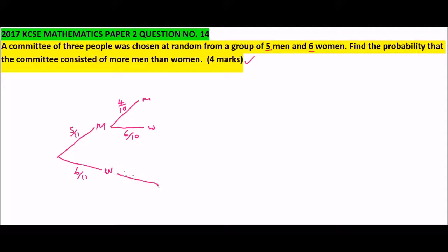Coming to the other branch — where we chose a woman first — the second time we could choose a man or a woman. Since men remained the same, the probability of choosing a man is 5/10. We had chosen one woman, so they remain 5, making the probability of choosing a woman 5/10.